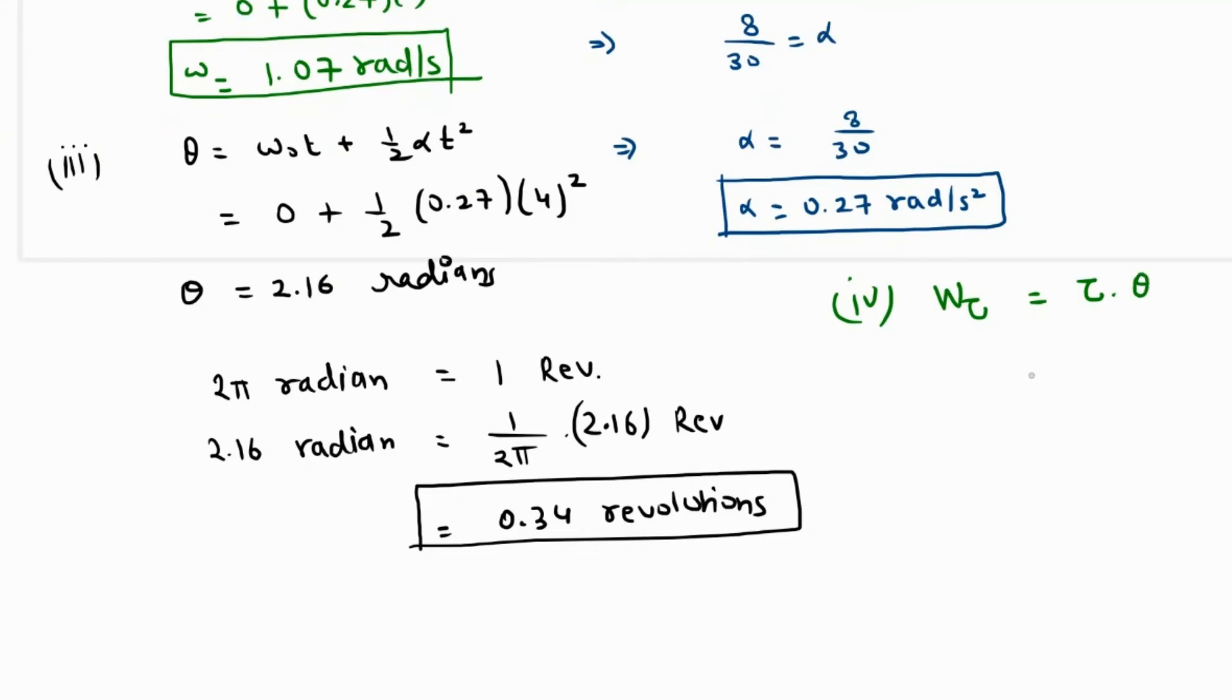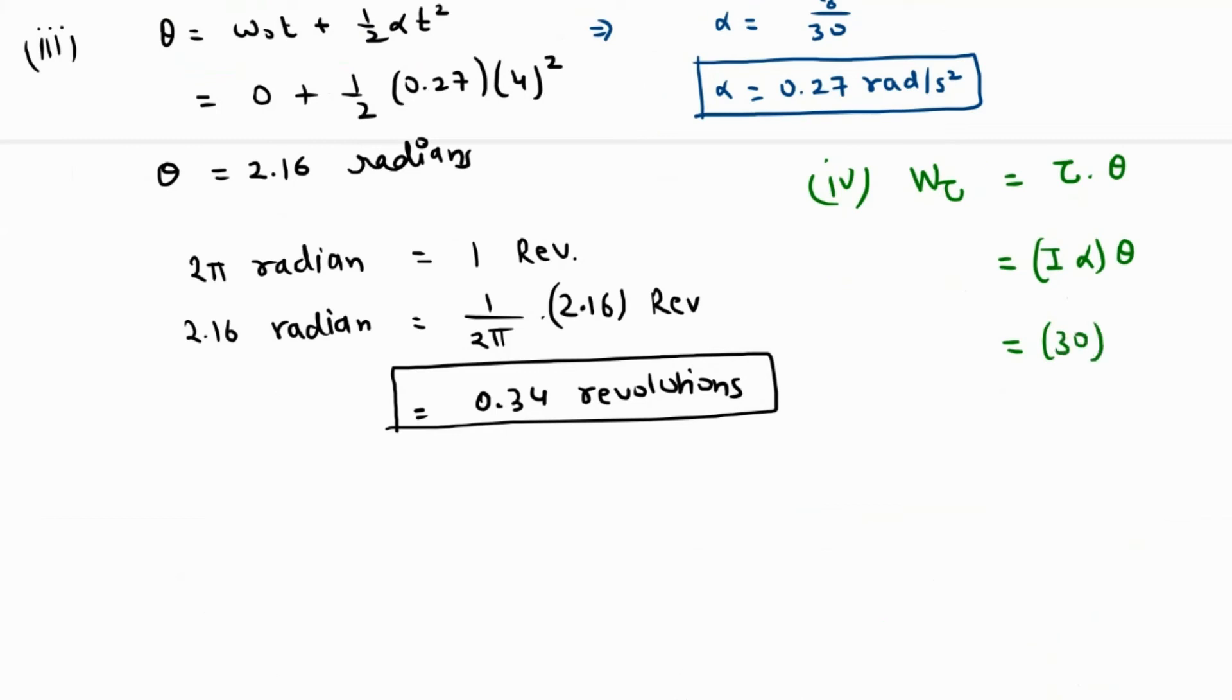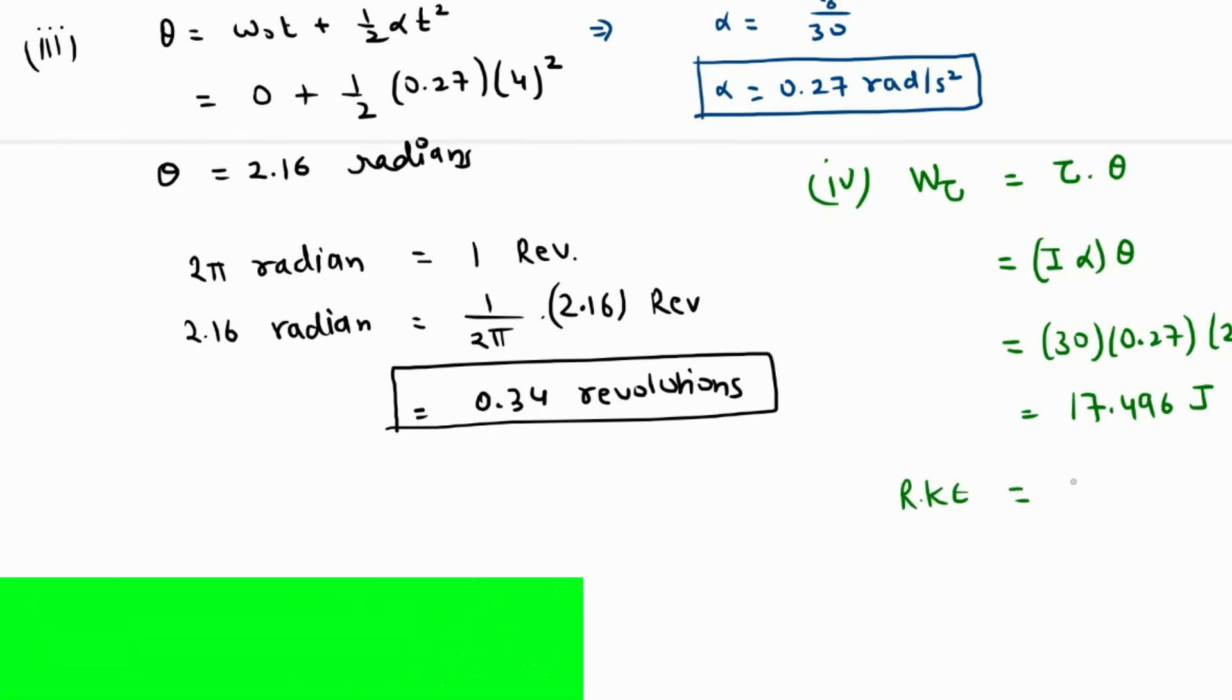Moment of inertia I is already given in the question - that was 30. α is 0.27, and θ we found as 2.16 radians. So this value comes out as 30 times 0.27 times 2.16, which is 17.496 joules.